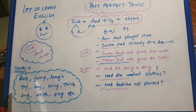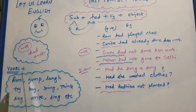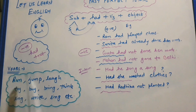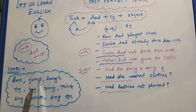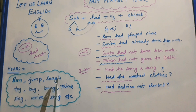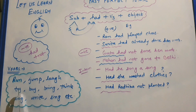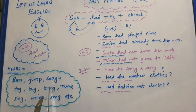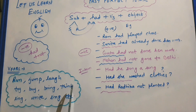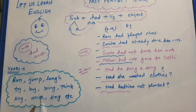Let us take some more examples of past perfect tense with more verbs. They had run a race. They had jumped over a wall. She had laughed. They had tried a match. They had bought a book. They had brought a shirt. They had thought over a story. They had sung a song. They had written a letter.